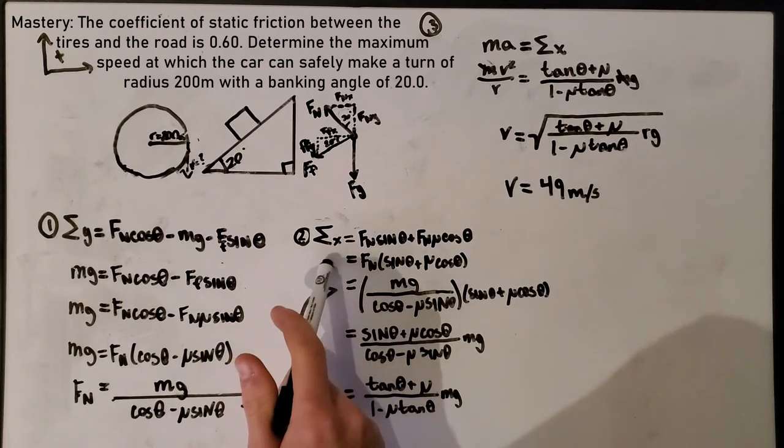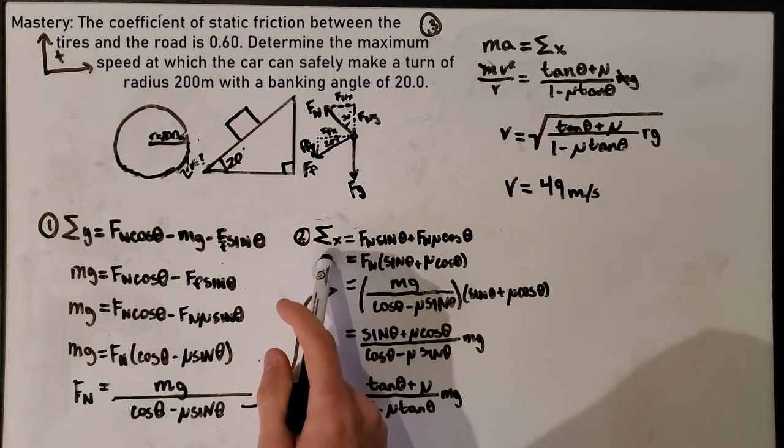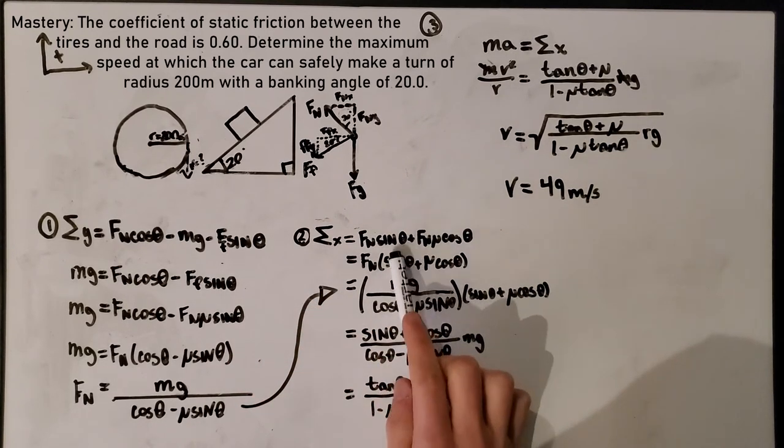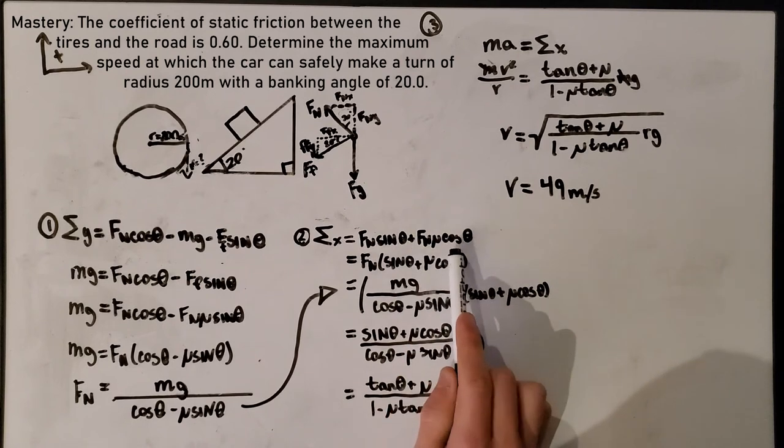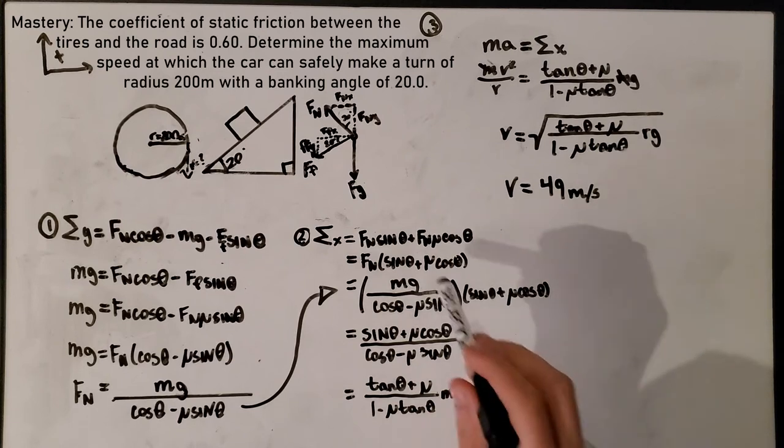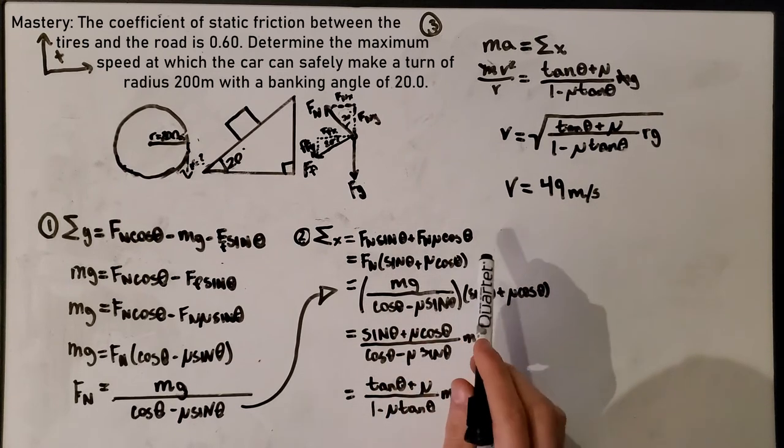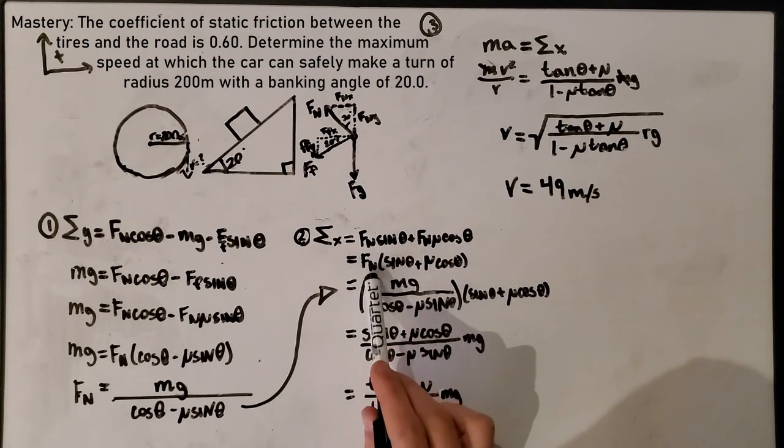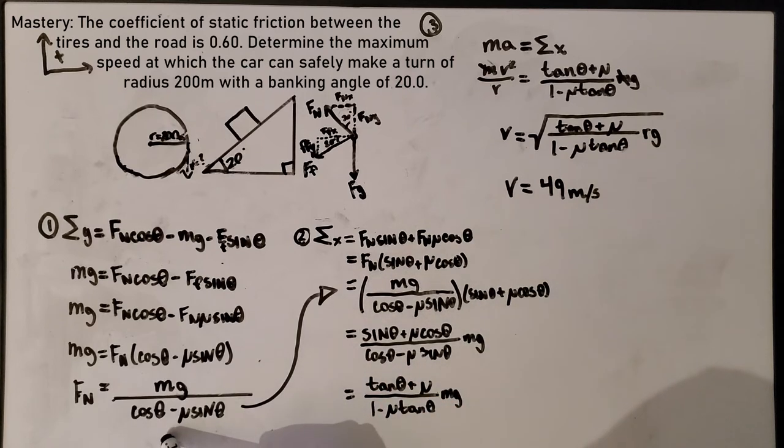The second step, we use the f net of x, which is the f normal x and then the f friction x. Then we isolate and use common factoring to remove the fn, which then we sub in our previous formula to that. And then we multiply and simplify to get this formula.